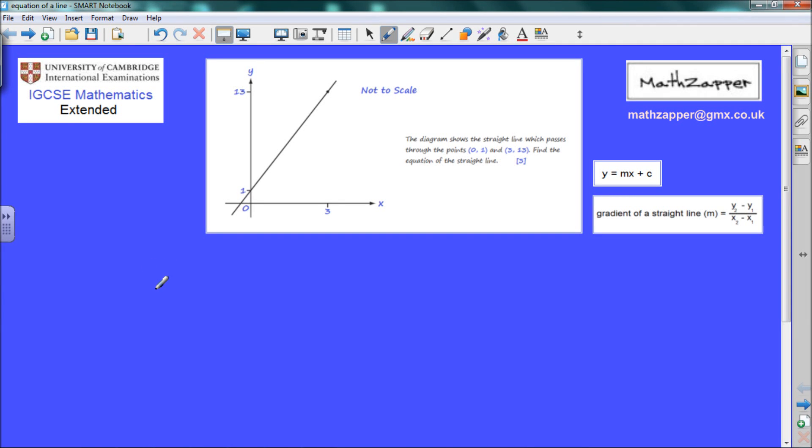University of Cambridge International Examinations IGCSE Mathematics Extended Course. The diagram shows the straight line which passes through the points 0,1 and 3,13 and we are asked to find the equation of that straight line.